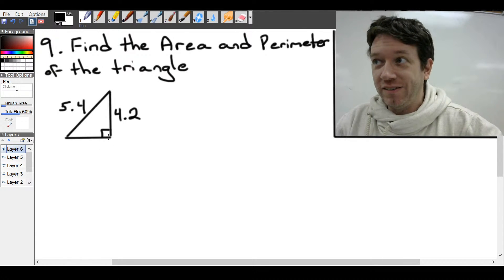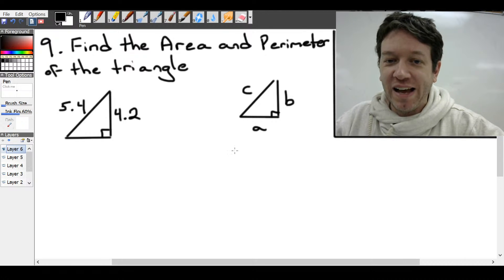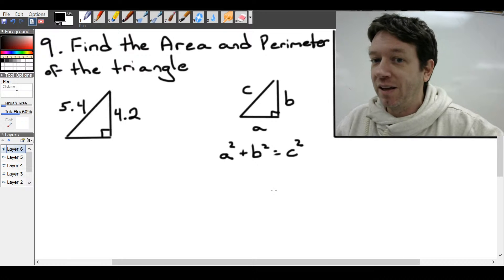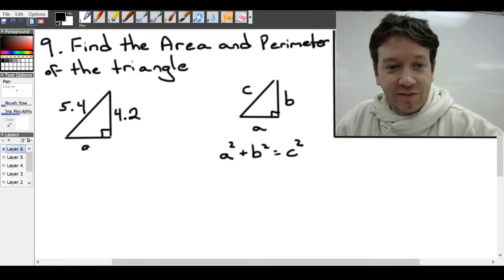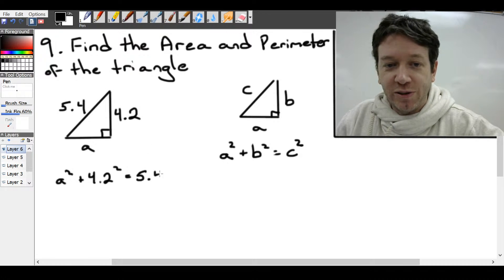and we have the equation for a right-angle triangle where the hypotenuse, let's label the hypotenuse as c, and the sides doesn't matter which, but a and b. We have our Pythagorean theorem, which is a squared plus b squared equals c squared. So we can apply this formula. This would be a. So we would have a squared plus b would be this side, 4.2 squared equals c, which is our longest side, the hypotenuse, 5.4 squared.